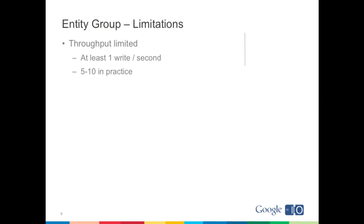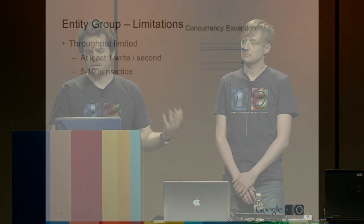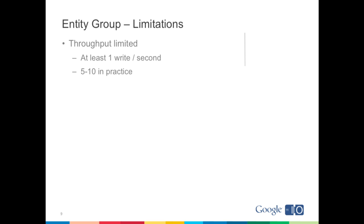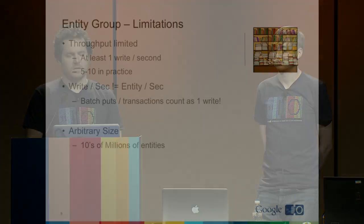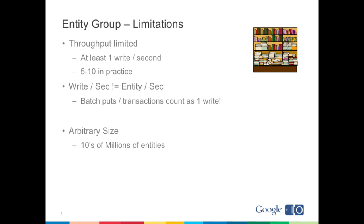There are limitations on entity groups beyond just these boundaries, the biggest being throughput limitations. We say you can get at least one write per second; in practice with the High Replication Datastore, you can get five to ten. If five writes come in at the same time, four of them fail with a concurrency exception and one gets through. However, a write per second does not mean an entity per second — if you use batch puts and transactions, those count as a single write, so you can achieve high entities-per-second throughput by batching writes. Also, entity groups can be arbitrarily large, spanning multiple machines while still enforcing transactionality. We have entity groups with tens of millions of entities in them with no degradation to performance.